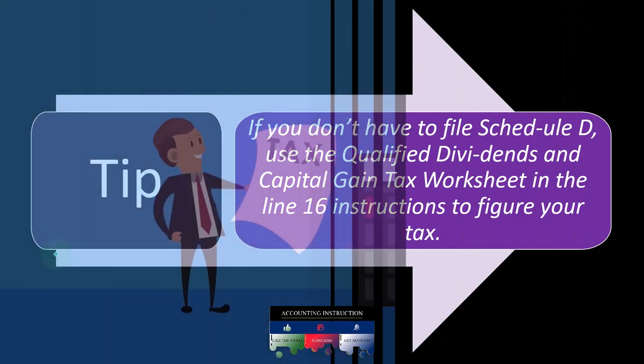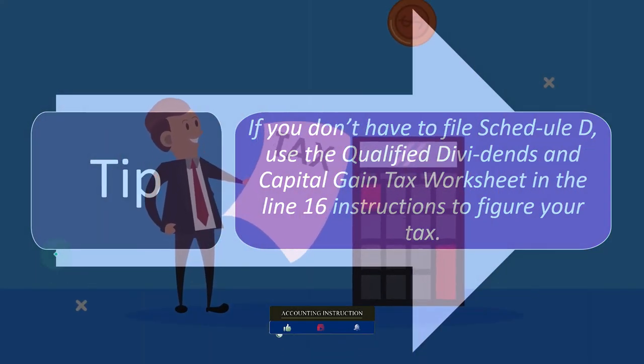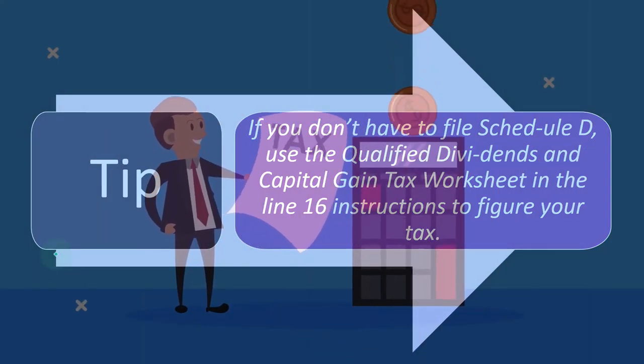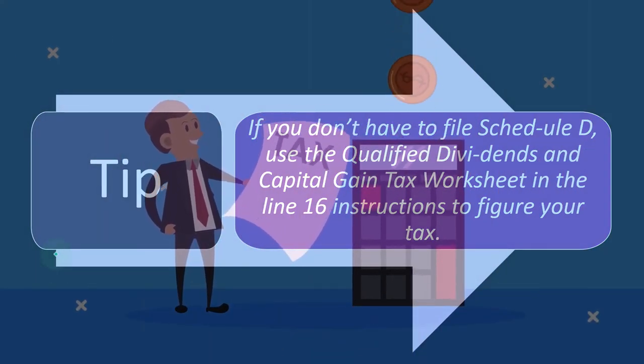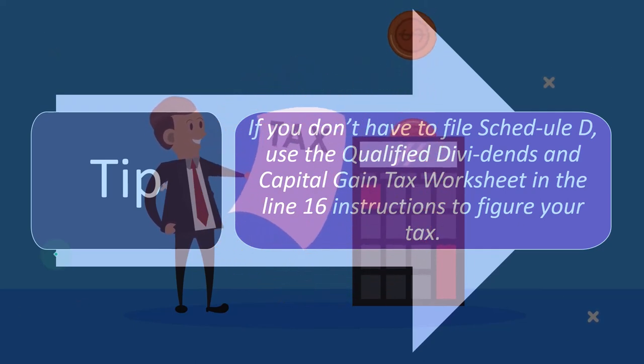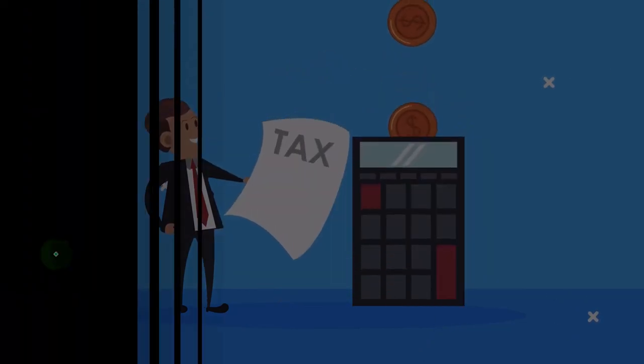Tip: If you don't have to file Schedule D, use the Qualified Dividends and Capital Gains Tax Worksheet in the line 16 instructions to figure your tax.